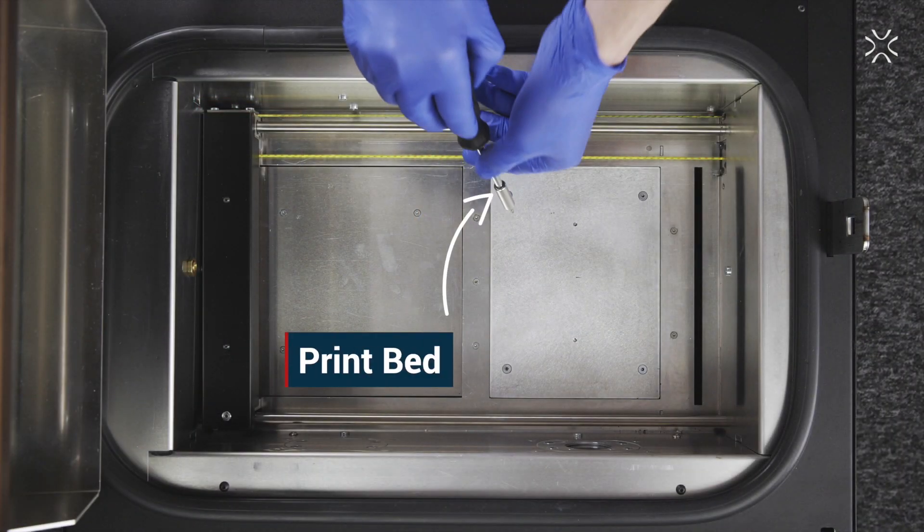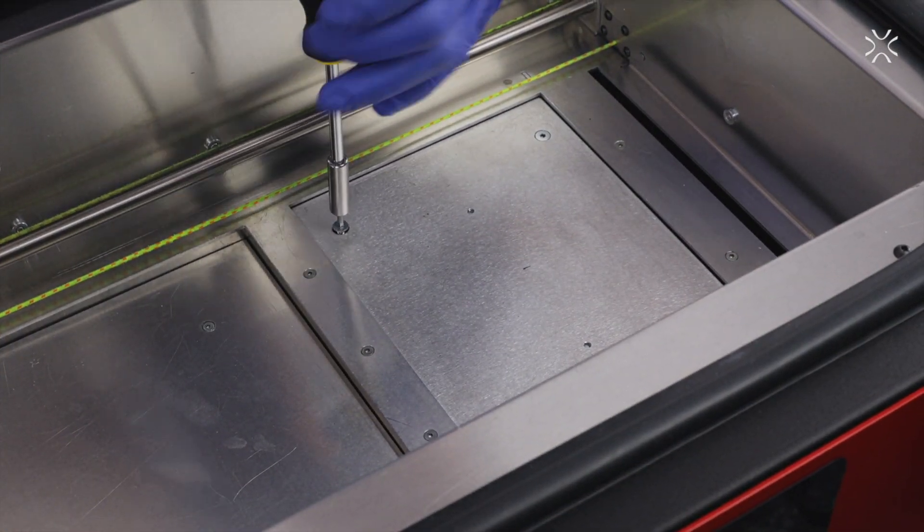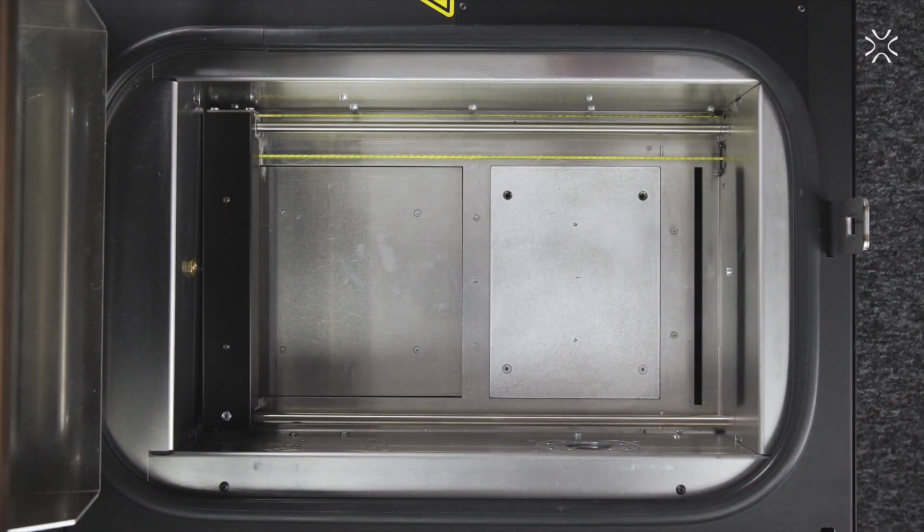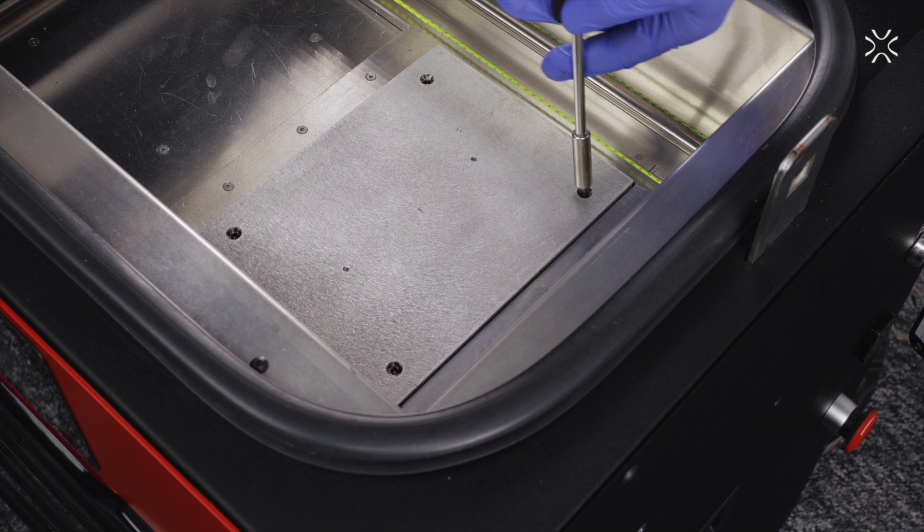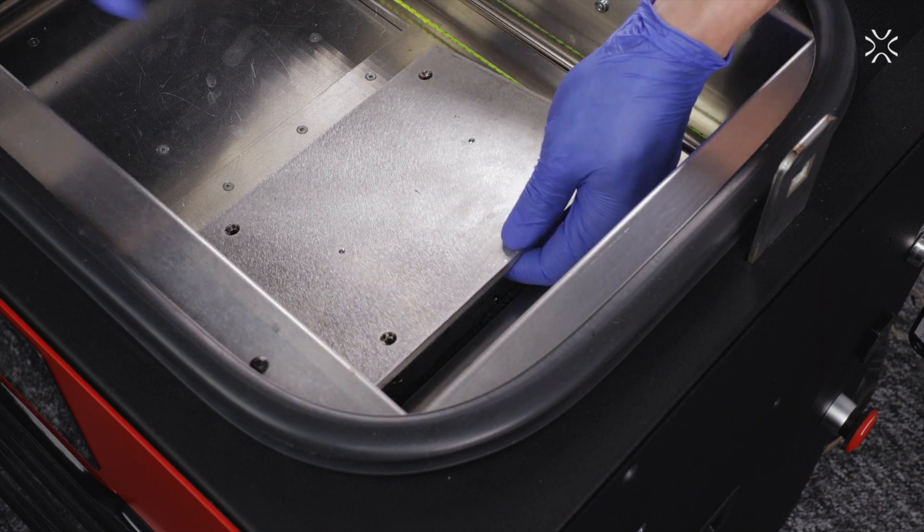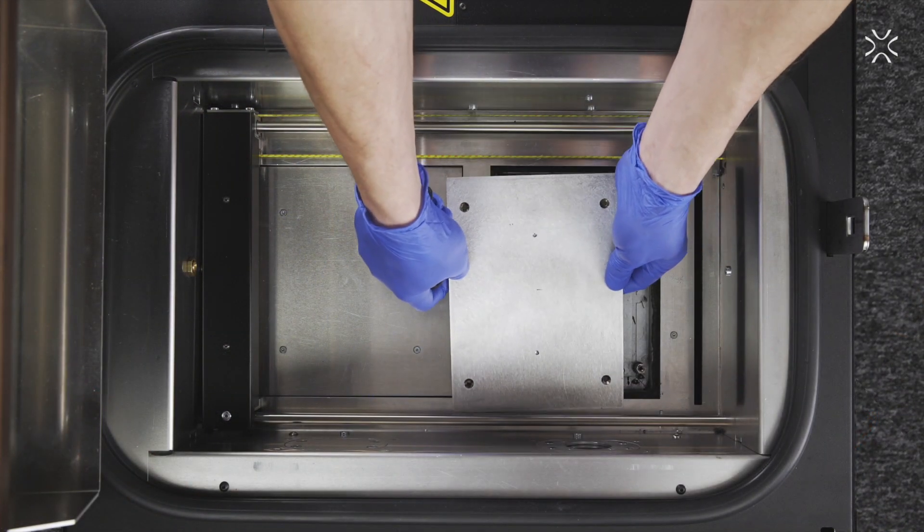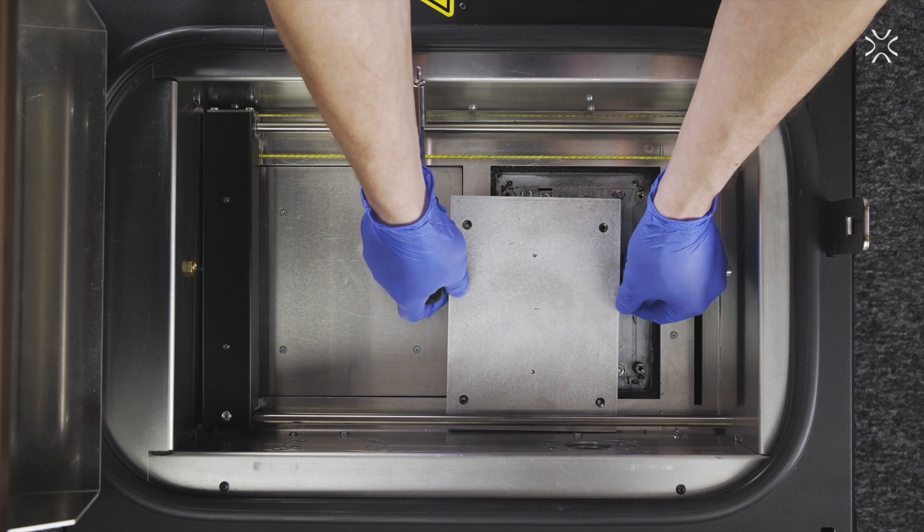Take your hex screwdriver and remove the four bolts that hold the print bed's plate. Lift up the plate a little but be careful. There are two heaters with wires attached to the plate's bottom. Reposition it gently as shown in order to avoid damaging them.